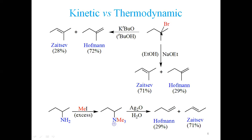Whether hydrogen is removed from one adjacent carbon or another depends on the size of the base. When potassium tert-butoxide in tert-butanol is used as the sterically hindered base, it prefers to remove a proton from the less sterically crowded terminal carbon, resulting in the less substituted (Hofmann) olefin being formed predominantly — about 72% of the product.